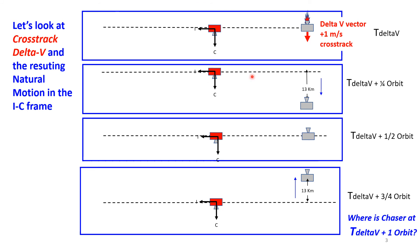It swung out in the positive C direction 13 kilometers. It moved to the side. Half a rev later it's back. It went back this way, still behind. Three-quarters, that's 18 hours—look, it swung out the other way. Now it's 13 kilometers to the negative cross-track direction. Where does it end up one orbit later? It comes back here, right there. It just goes back and forth synchronized with the orbit.